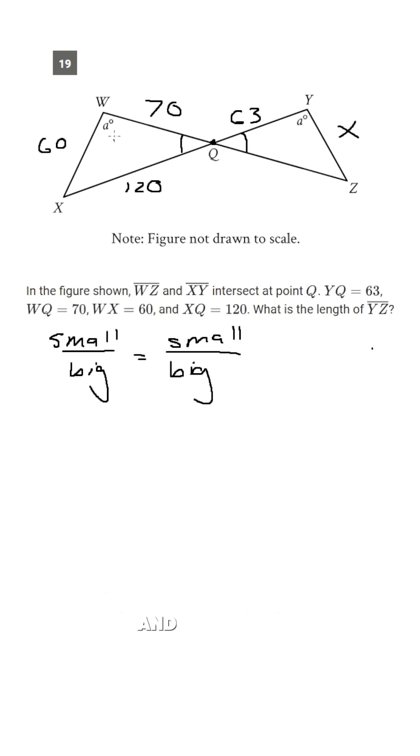So what we do is we match up a side in the smaller triangle, so let's say this side, to a side that it matches up with in the bigger triangle, so let's say this side. And you put that as one fraction, so 63 over 70, and you set that equal to a fraction with what you want. So we have in our smaller triangle an x, and we would put that over 60.